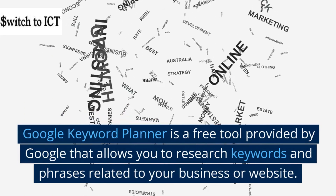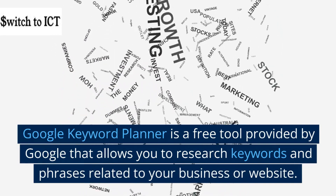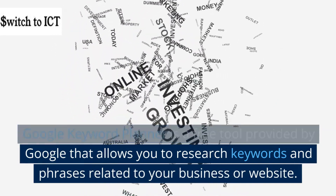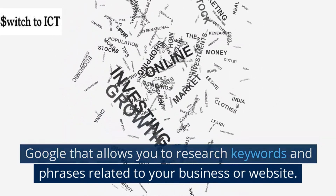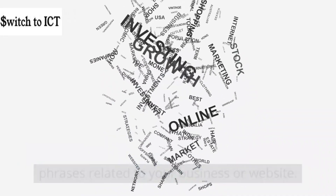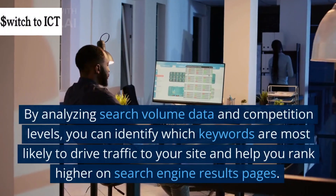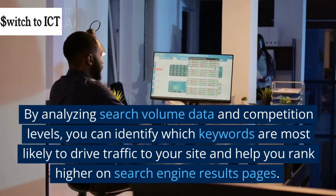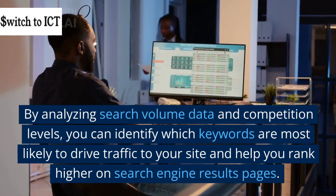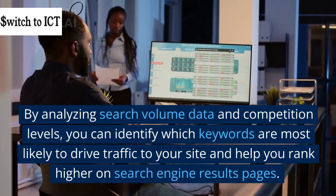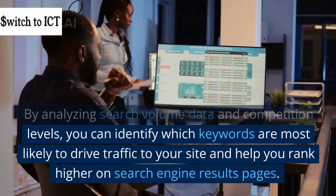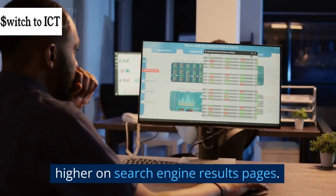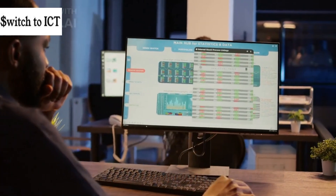Google Keyword Planner is a free tool provided by Google that allows you to research keywords and phrases related to your business or website. By analyzing search volume data and competition levels, you can identify which keywords are most likely to drive traffic to your site and help you rank higher on search engine results pages.